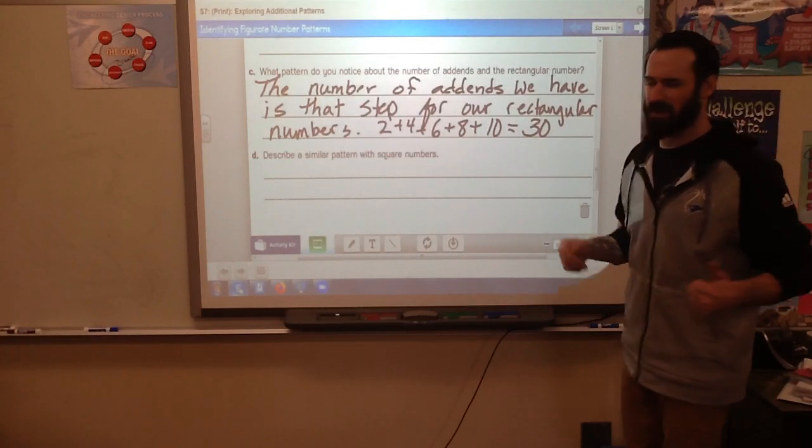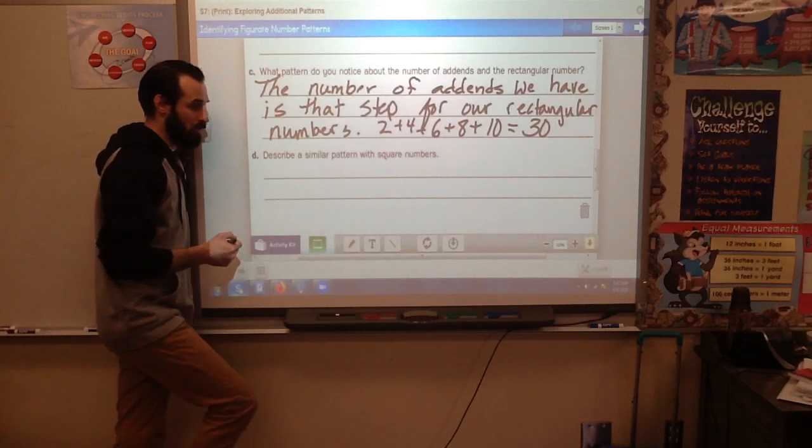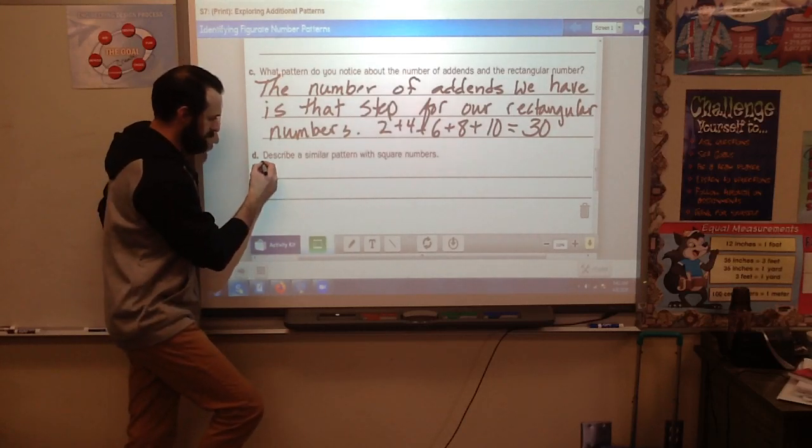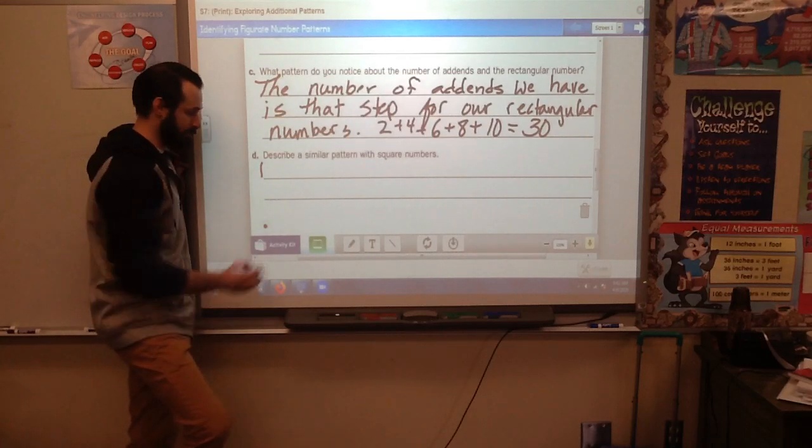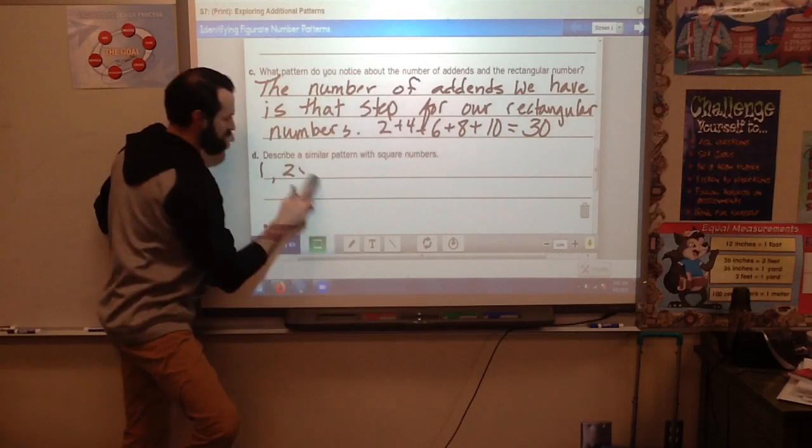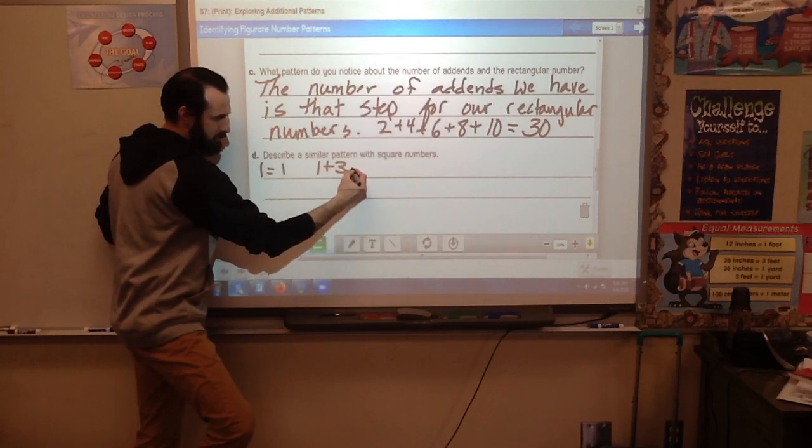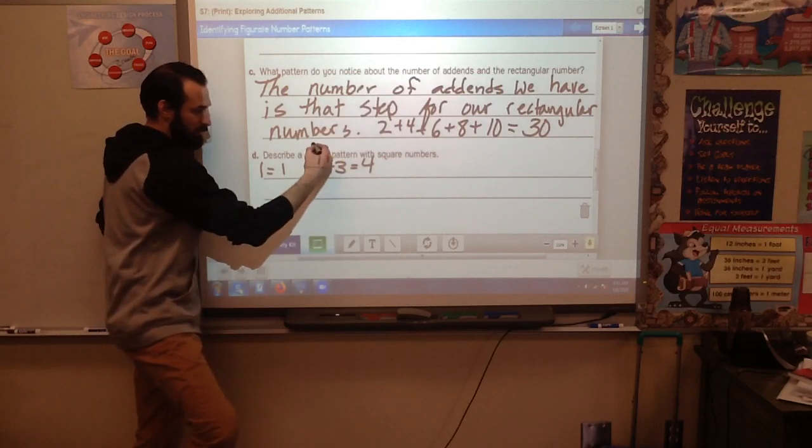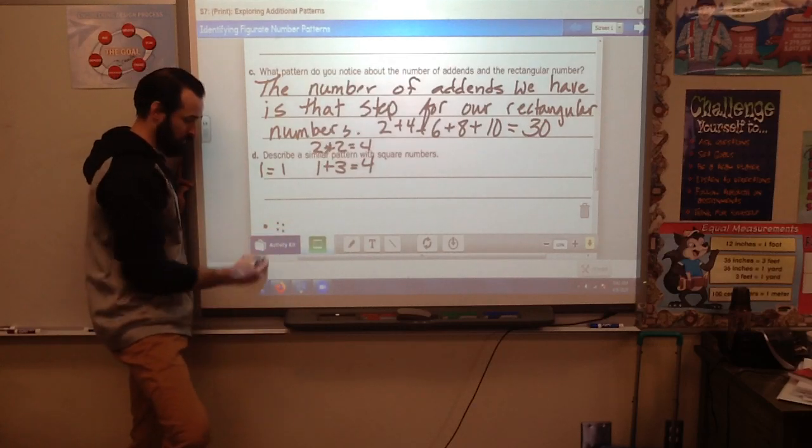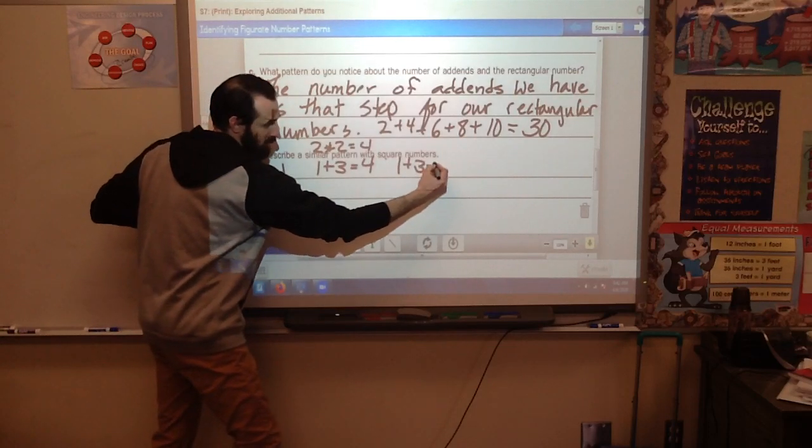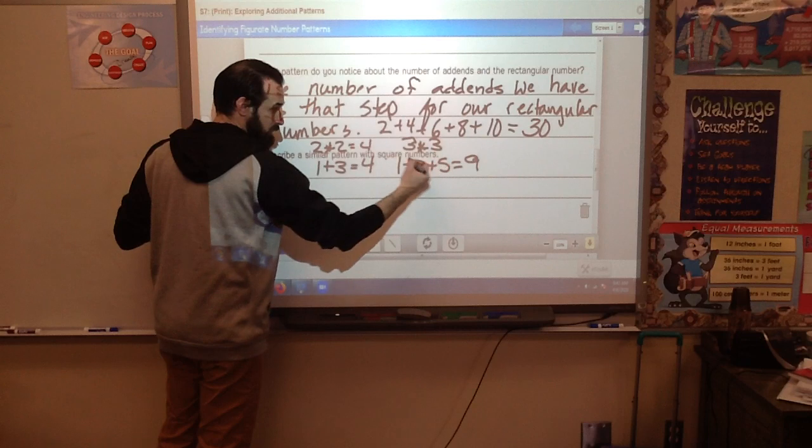And it says describe a similar pattern with square numbers. I'm just going to show you this. Square numbers would be a little bit different. The first square number is 1, because 1 times 1 is 1. If I were to make that as an array, it would just look like 1 dot. The next one would be 1 plus 3 equals 4. If it's a square number, that's the same as doing 2 times 2 equals 4. 1 plus 3 plus 5 is 9. 3 times 3 is 9.